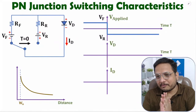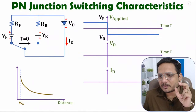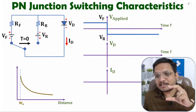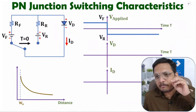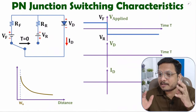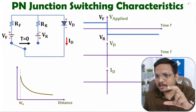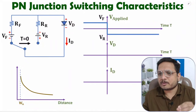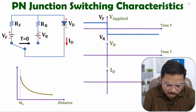Hello friends, welcome to Engineering Funda Family. In this video I'm going to explain PN junction switching characteristics. I'll explain what happens when a PN junction in forward bias is switched to reverse bias — how that transition will happen from forward to reverse. We'll look at the circuit first, then internal behavior, then the timing diagram.